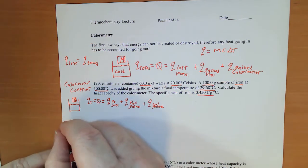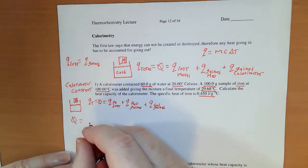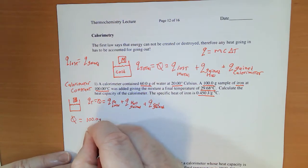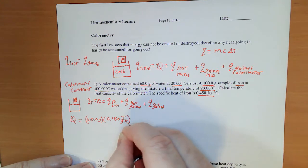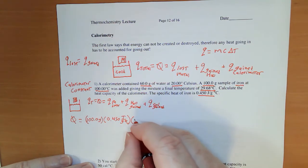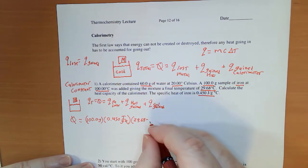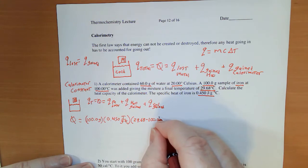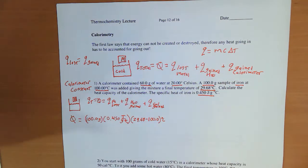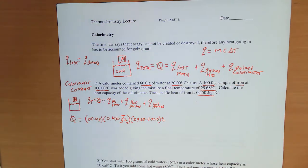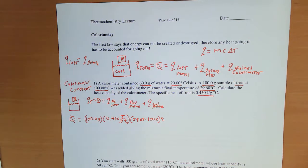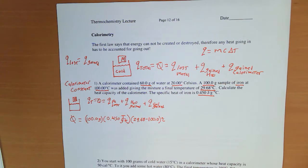That means zero equals, for the iron, I have 100.0 grams of iron times a heat capacity of .450 joules per gram degree, times a temperature change which is 29.68 minus it started at 100 degrees Celsius. The reason that you're going to see the temperature of 100 degrees Celsius keep popping up is it's common practice to take a hot plate, put a beaker on it with a lot of water, bring the water to a boil, and drop in that piece of metal and let it come to thermal equilibrium with the water.